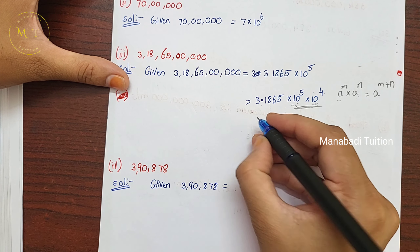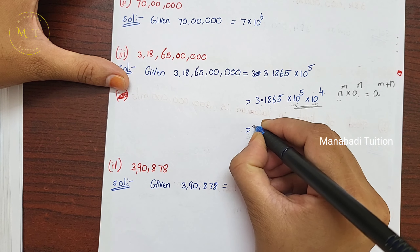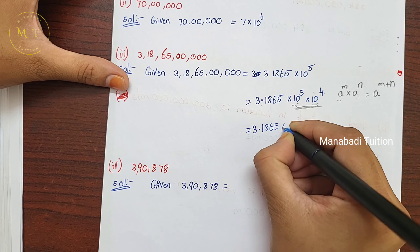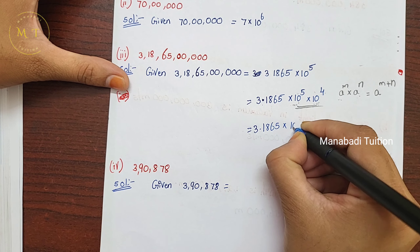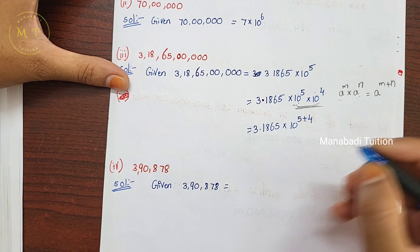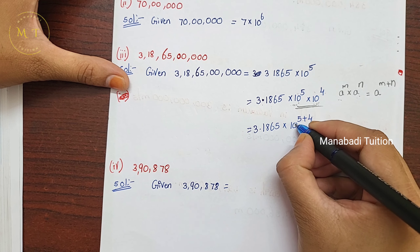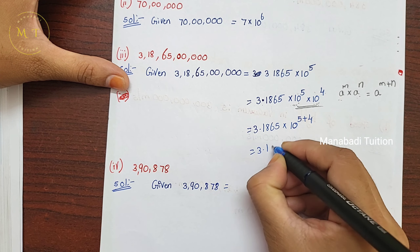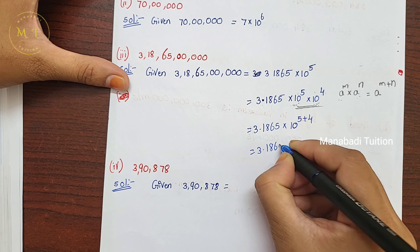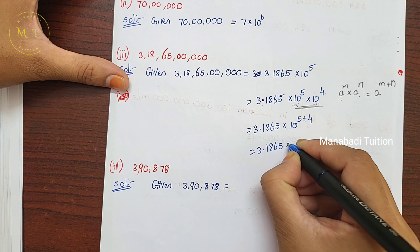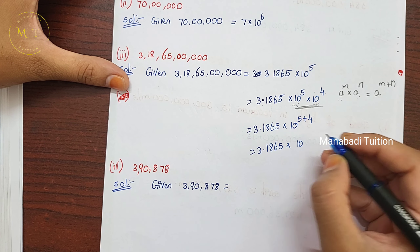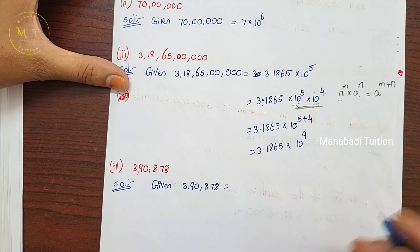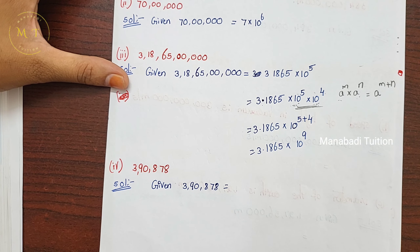So here we write 3.1865 into 10 power. The exponents are added: 5 plus 4 gives 9. That equals 3.1865 into 10 power 9.